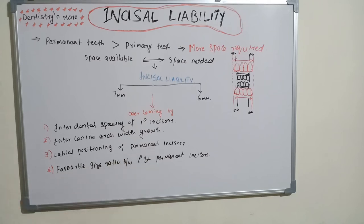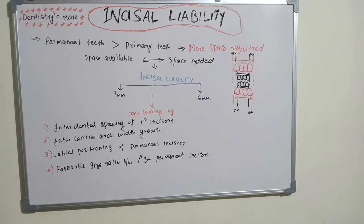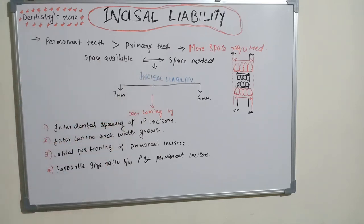The third mechanism is labial positioning of permanent incisors. Permanent teeth are more labially — or forwardly — positioned compared to the primary dentition, which sits in an almost upright position. This forward positioning increases arch size and helps overcome the incisor liability.